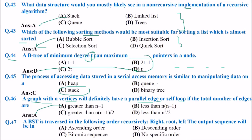A BST is traversed in the order Right, Root, Left recursively. In a binary search tree, the left members are smaller and the right members are larger, and this is recursively true for all subtrees. So when you traverse Right, Root, Left, you will get the output in descending order.